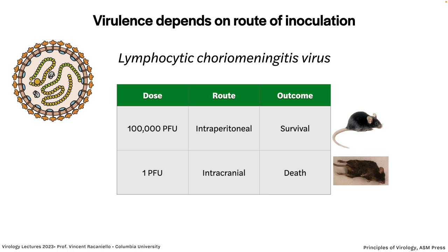Here's an example of how virulence depends on route of inoculation, using LCMV, a rodent virus. If you put 100,000 PFU intraperitoneally into mice, all the mice survive. But if you put just 1 PFU directly into the brain intracranially, they're all dead. The route of inoculation makes a big difference — probably because the virus has trouble getting from the peritoneal cavity to the brain. In people, you have to make sure everyone gets the same dose and the same route of infection, and that's very hard to do.